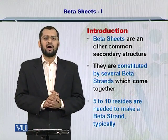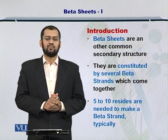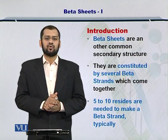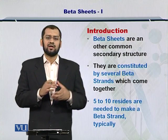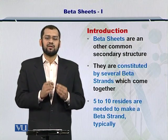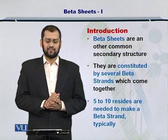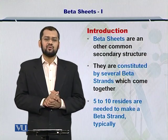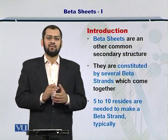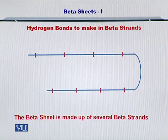Beta sheets are the other most common secondary structure that exists in proteins. Beta sheets are formed from beta strands once they come together and form the beta sheet. So essentially the first step in the formation of a beta sheet is a beta strand. Also, 5 to 10 residues are required at minimum to start formation of a beta strand.